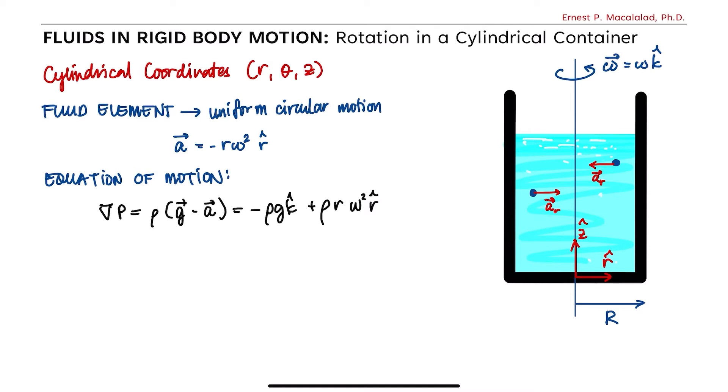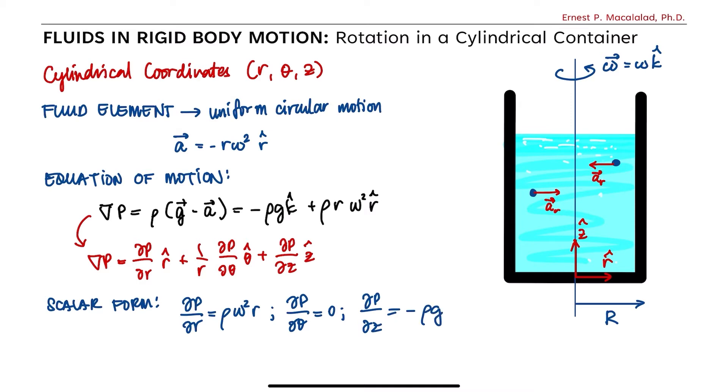Taking note that the pressure gradient in cylindrical coordinates is given by this equation. Therefore, separating this to its scalar form, we now have derivative of p with respect to r equals rho omega squared r, derivative of p with respect to theta equals zero, and derivative of p with respect to z equals negative rho g, which tells us that pressure are only functions of r and z and it is independent of theta.